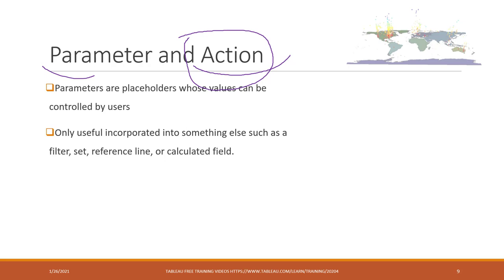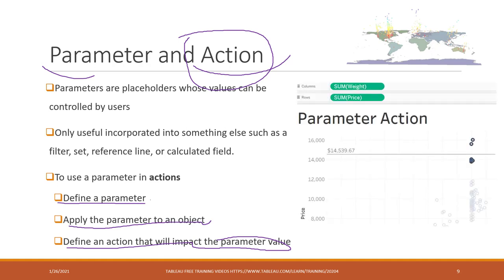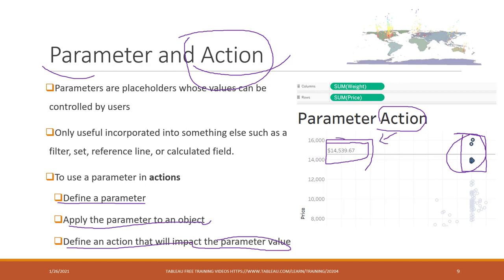To combine parameters and actions together, the process is: we define the parameter, we apply the parameter to an object, and we define an action that will impact the parameter value. For example, I want to show the average price of the selected markers. When I select those points, I want to see the average price. That action is called select, and that action will change the values and pass them to the parameters, which will then be passed to the reference line.